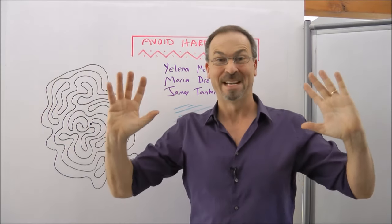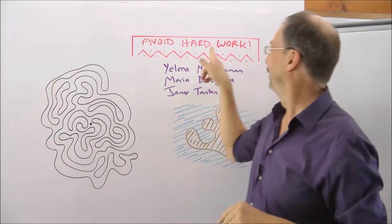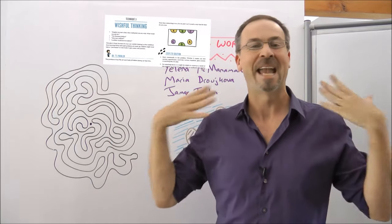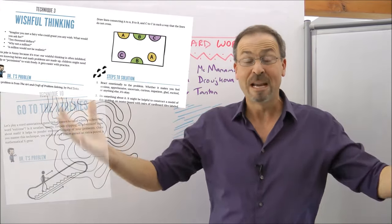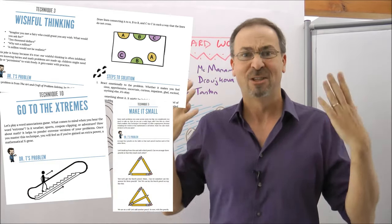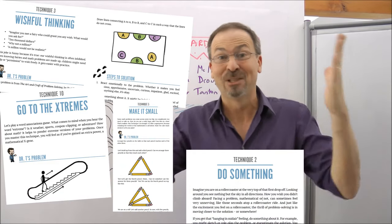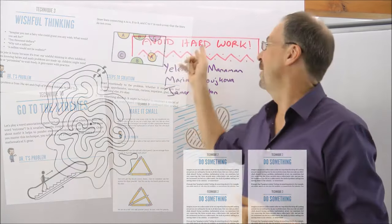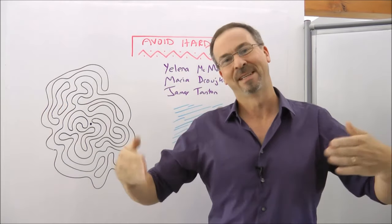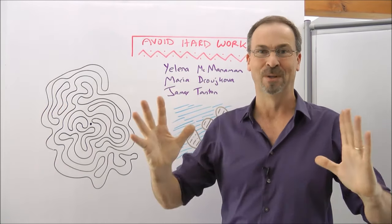We solved it by avoiding hard work. In fact, this book is full of all sorts of such strategies. For example, engage in wishful thinking, go to extremes, make it small, or just do something. That's actually a problem solving technique. Just do something, anything, try it. And we lay out all sorts of wonderful examples and ways to engage wonderful conversation with youngsters about this mathematical world.